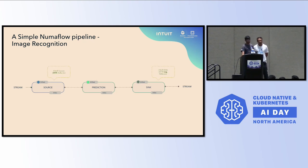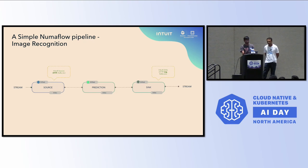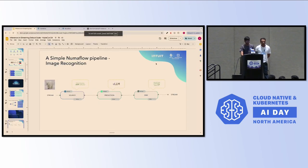For this demo, I'm using an HTTP source, but Numaflow does come with a lot of built-in sources like HTTP, Kafka, Pulsar, and a few others. If you're interested in writing your own sources, you can do that too, because we provide multi-language SDK support ranging from Python, Java, Go, and even Rust. I'm writing results to a log sink just for demo purposes, but you can write to any downstream — from a DB to Kafka or anything else. For the prediction, I'm using an LLM model served through vLLM, where the model is hosted locally on the pod itself.